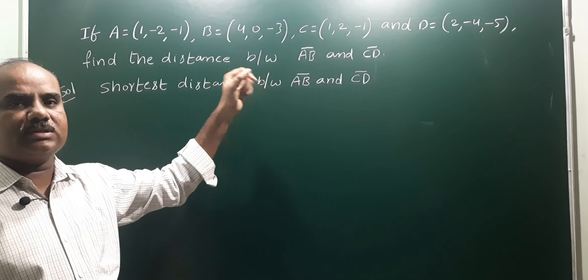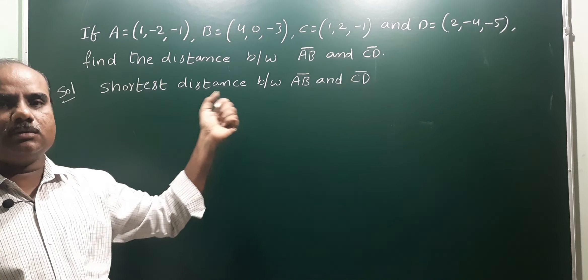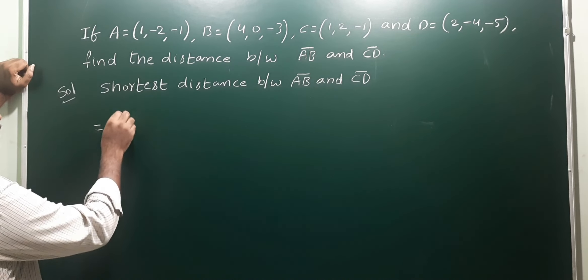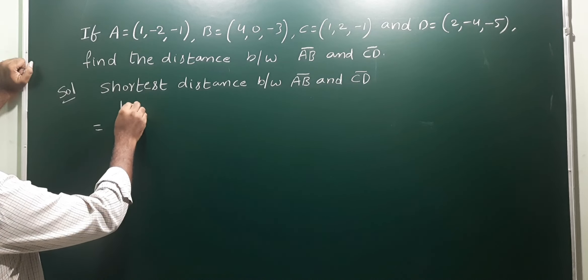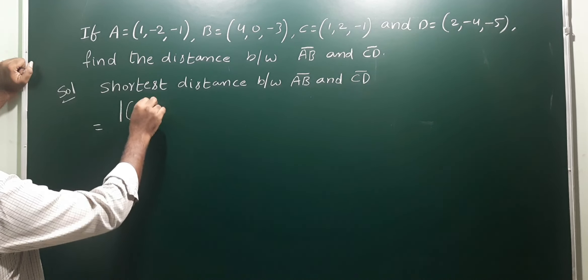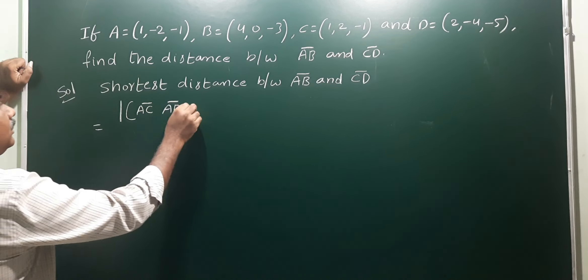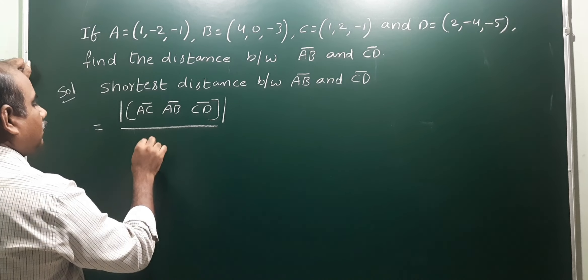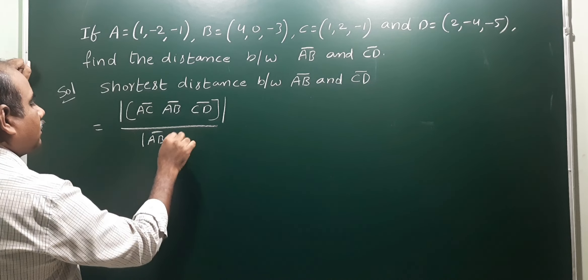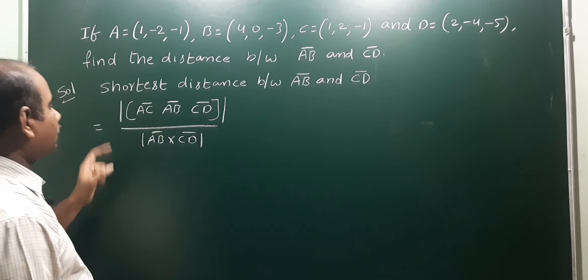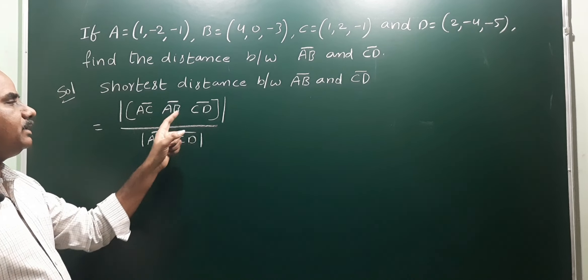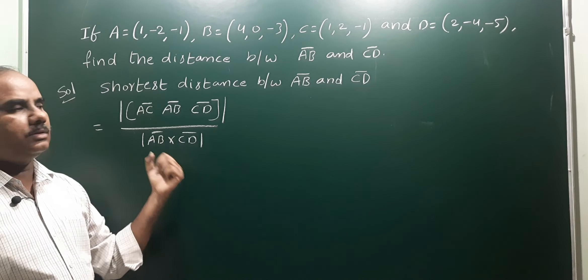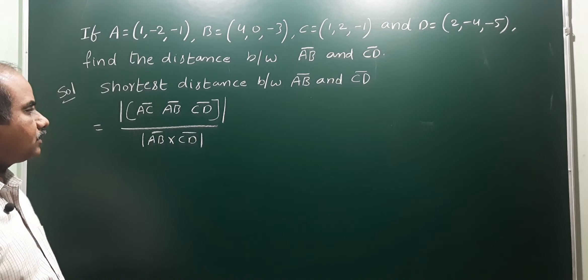The shortest distance between AB bar and CD bar is given by the formula: modulus of box [AC, AB, CD] divided by modulus of AB cross CD. So in this formula, we calculate AB bar and CD bar, and also the vectors AC, AB, CD.